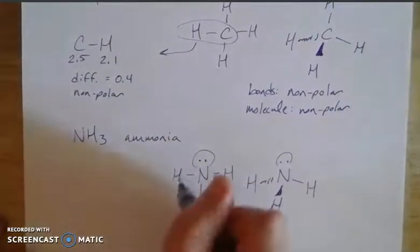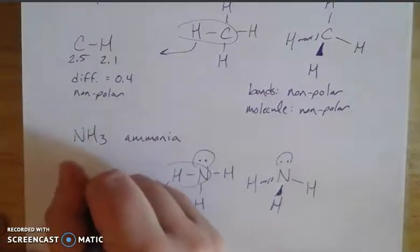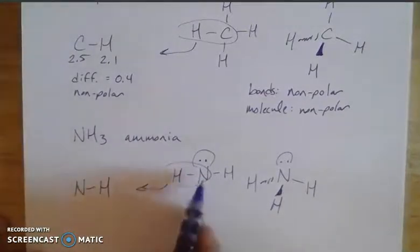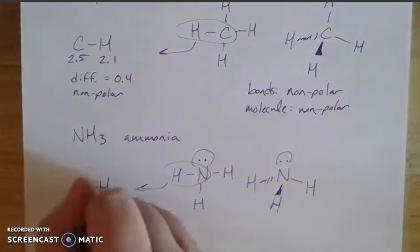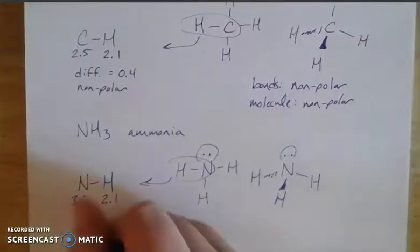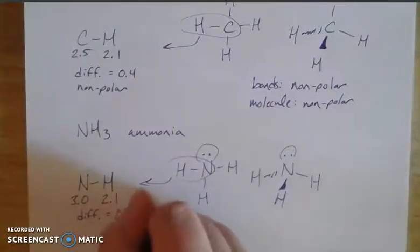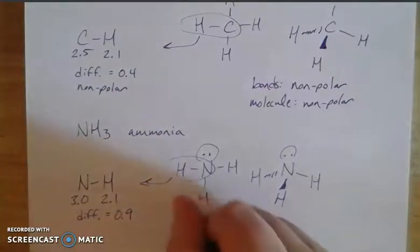If I take one nitrogen-to-hydrogen bond out of context, nitrogen is 3.0 and hydrogen is 2.1, so the difference is 0.9. That's greater than 0.4, which means it's a polar bond.